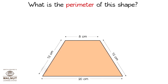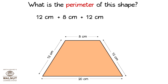What is the perimeter of this shape? We have to go around the shape and add up all the sides. Let us add the sides up. What do we get? 12 cm plus 8 cm plus 12 cm plus 20 cm is equal to 52 cm.